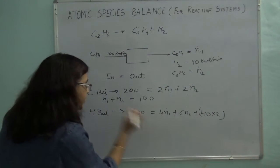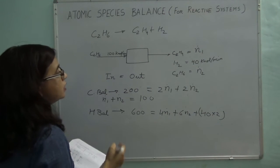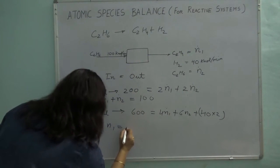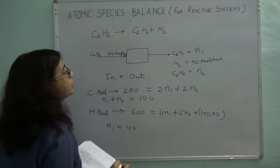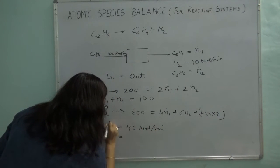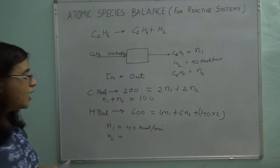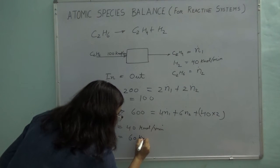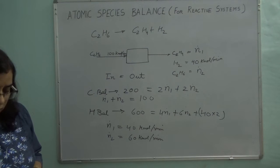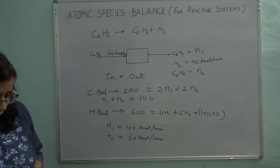Solving these two equations, N1-dot — which is C2H4 — equals 40 kilomoles per minute. You can go and verify whether you get the same answer.